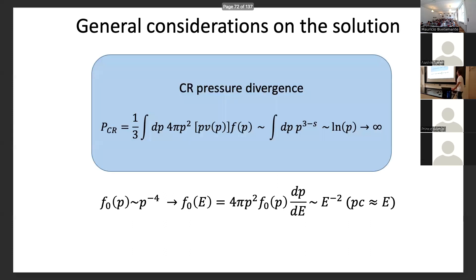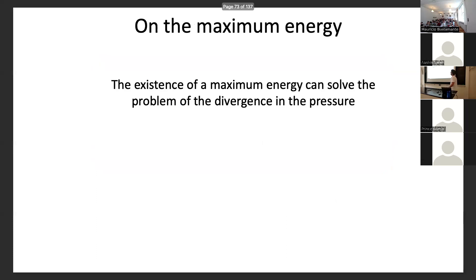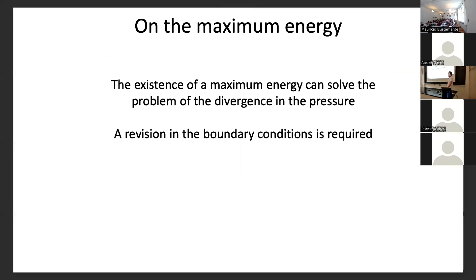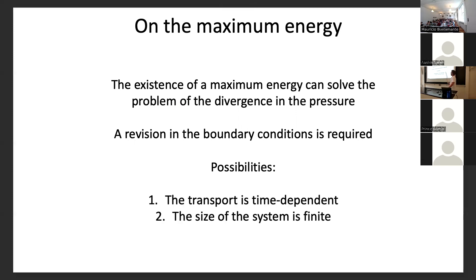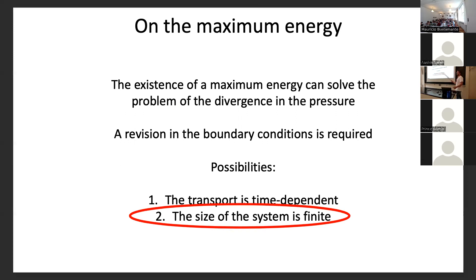There is a problem with this solution: integrating the energy density of cosmic rays accelerated at shocks up to infinity gives a logarithmic divergence. This can only be resolved by imposing a maximum energy. The maximum energy can be obtained by revising our boundary conditions. We have two possibilities: either our stationarity assumption was wrong, or the system has a finite size. For wind bubbles, it's the finite size that matters; for transient events like GRBs or supernova remnants, it's typically time dependence.